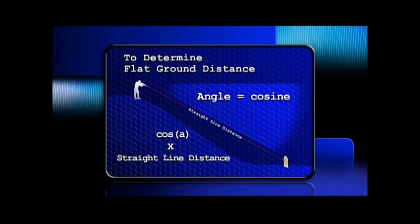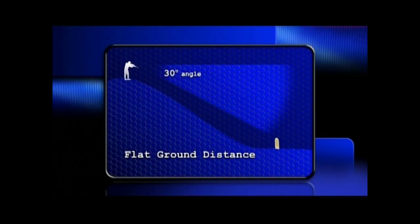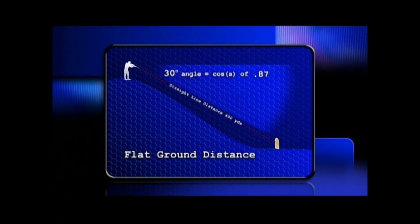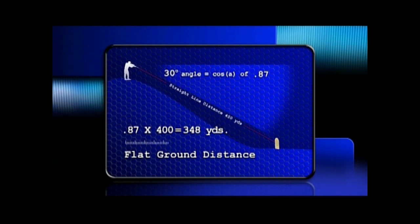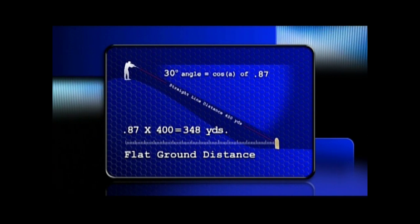Let's simplify it using the example of Sergeant Mangione's rifle. He had an angle of 30 degrees to the target. The cosine of 30 degrees is 0.87. Our range to the target straight line was 400 yards as obtained by a laser range finder. 0.87 times 400 equals 348, or a flat ground distance of 348 yards to the target — a difference of 52 yards from our straight line distance.